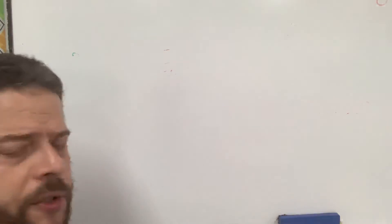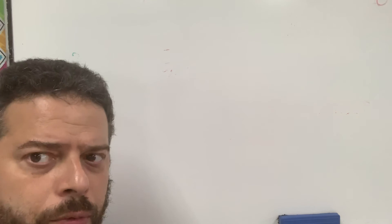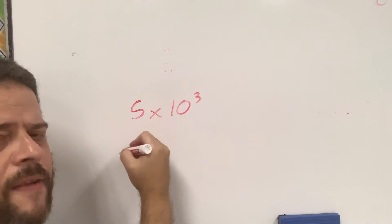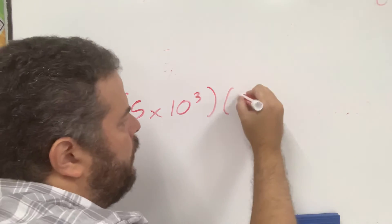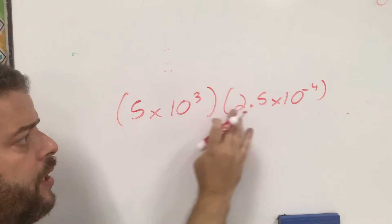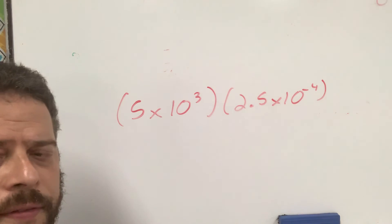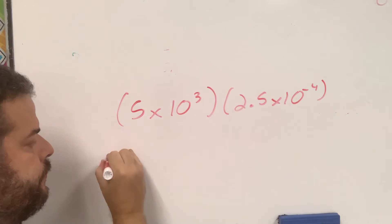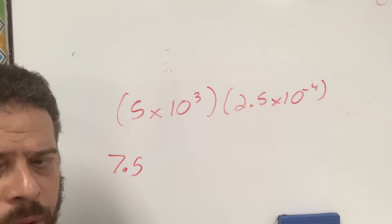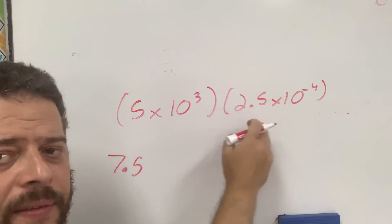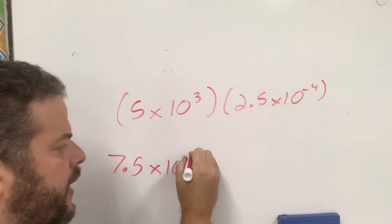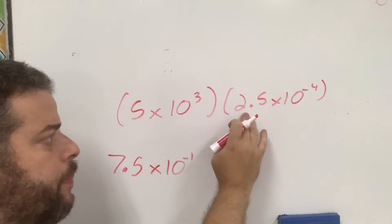Now, to cover multiplication and division — again, you will have to use the rules of exponents that you learned. Take 5 times 10 to the 3 multiplied by 2.5 times 10 to the negative 4. What you do is multiply the numbers: 5 times 2.5 is 7.5. And then you add the exponents — when you multiply bases that are alike, you add the exponents. So 3 plus negative 4 is negative 1, giving you 7.5 times 10 to the negative 1.